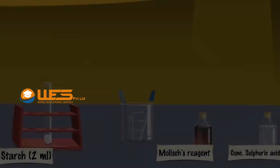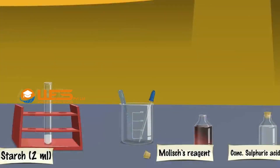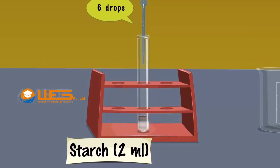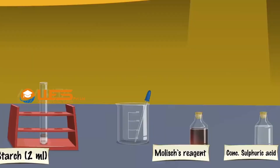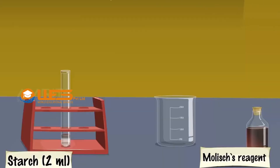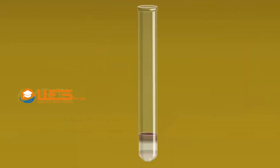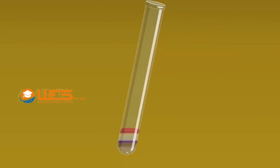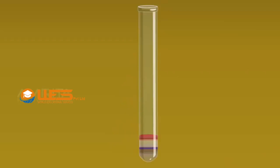Starch. Take Molisch's reagent using a dropper. Add about 6 drops of Molisch's reagent into a test tube containing 2 ml suspension of starch. Using a dropper, take a few drops of concentrated sulphuric acid. Add it slowly along the side of the test tube without mixing. A red-violet ring is produced at the junction of the two layers — acid layer and test layer — indicating the presence of carbohydrates.